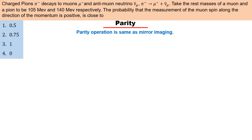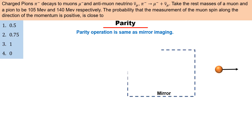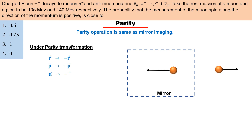कई physical quantities हैं जिन पर parity operator operate करने पर उनके sign change हो जाते हैं, जैसे displacement। अगर कोई particle right-side की ओर displace हो रहा है तो उसके mirror image में यह left-side की ओर move करता हुआ दिखाई देगा। इसी तरह momentum, acceleration, force — सभी के sign parity transformation में change हो जाते हैं। लेकिन कुछ quantities ऐसी हैं जो parity transformation के अंदर भी invariant बने रहती हैं।